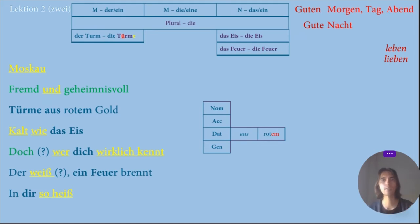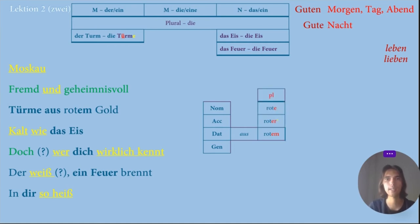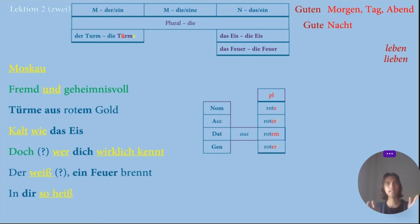I wanted to focus on Rotem as well. So if Rotem is dative, there should be a difference between nominative, accusative, dative, and genitive. I started to analyze this and found that in nominative it's Rotem, in accusative it's Rotem, in dative it's Rotem, and in genitive it's Rotem. So in that particular case, we can identify that accusative and genitive are the same.